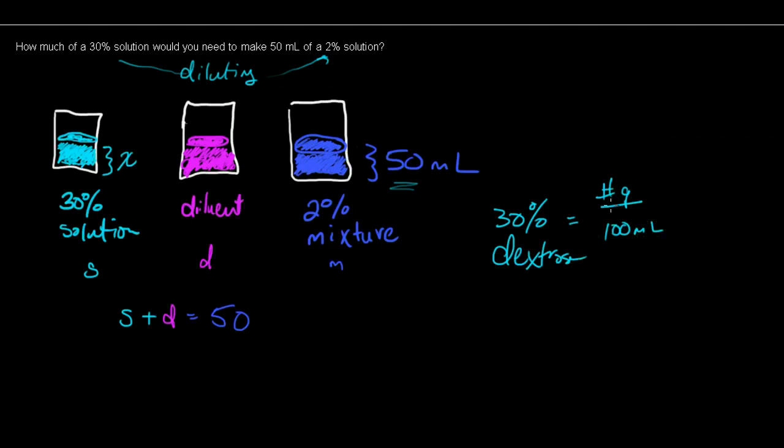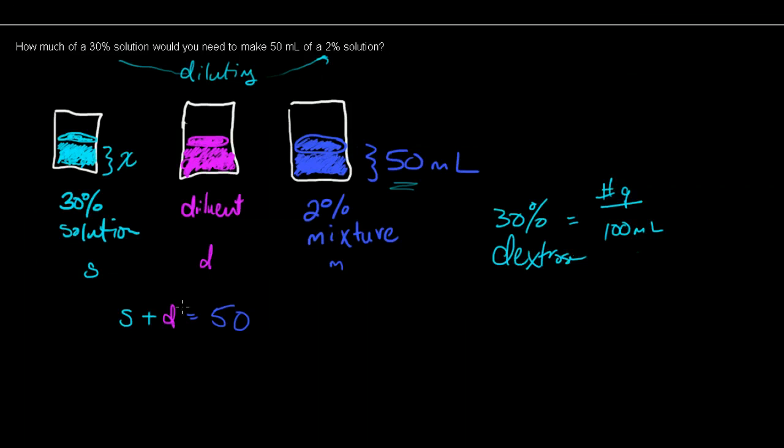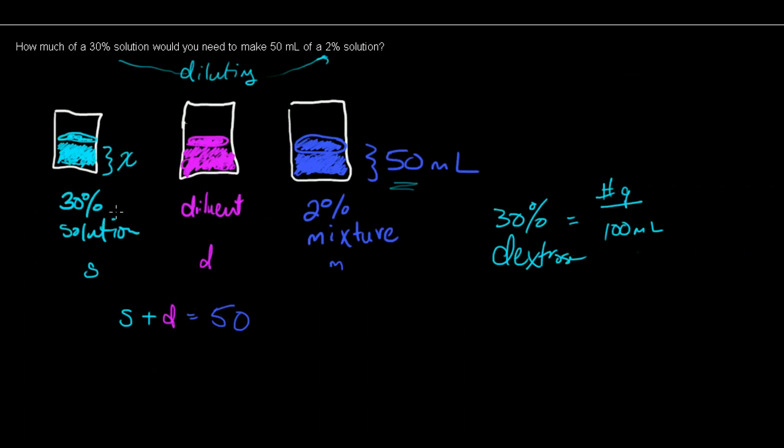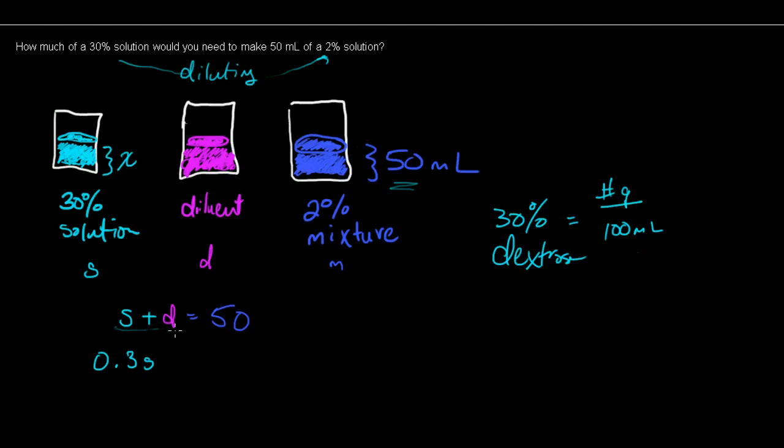So in a 30% dextrose solution then I have 30 grams dextrose per 100 ml, but again as a mathematician I know that however much solution that I have, I have 0.3 of it is the dextrose.